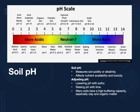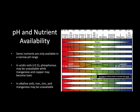Soil pH measures the acidity or alkalinity on a scale of 0 to 14. A pH of 7 is neutral; below 7 is acidic, and above 7 is alkaline or basic. If soil pH is too high, we can add sulfur to lower it. If it's too low, lime can be added to raise it. But some soils, especially those with high clay or organic matter content, have a high buffering capacity, making them resistant to pH changes.